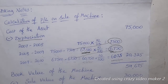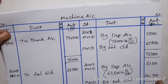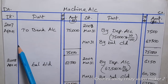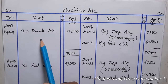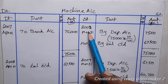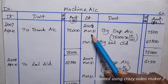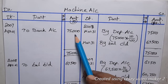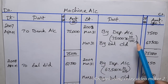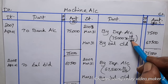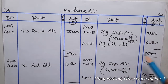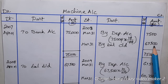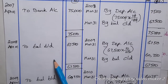Now let's prepare the machine account. On 1st April 2007, debit the bank account with ₹75,000. At the year end March 31st 2008, by the depreciation account: 10% depreciation is ₹7,500. After totaling and balancing, the closing balance is ₹67,500, which is brought down to the next year.